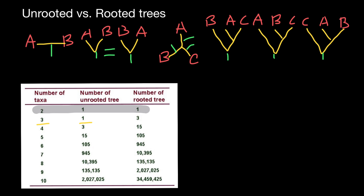So only three variants are possible. You are not going to get new variants of the relationship between these three taxa. If you rotate the whole phylogenetic tree, you are not going to generate a new variant of the relationships. For example, rotating gives you C, B, A — but it's the same as C, A, B. And rotating the whole tree gives B, A, C — it doesn't change anything. With three roots, we get three rooted trees.